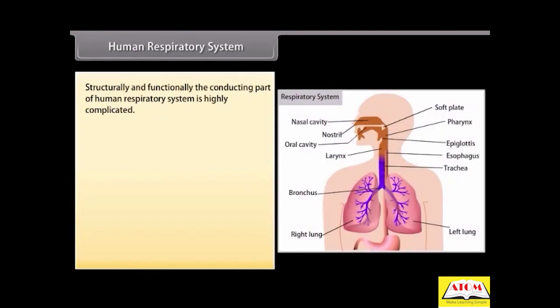Human respiratory system. Structurally and functionally, the conducting part of human respiratory system is highly complicated. The mammalian respiratory system consists of nostrils, nasal cavity, larynx, trachea, bronchi, bronchioles, alveoli, lungs, and diaphragm.